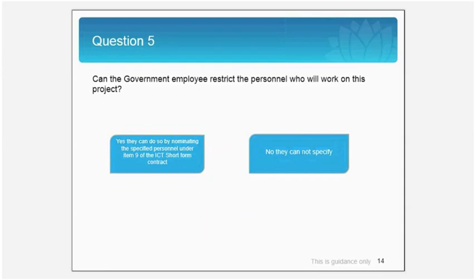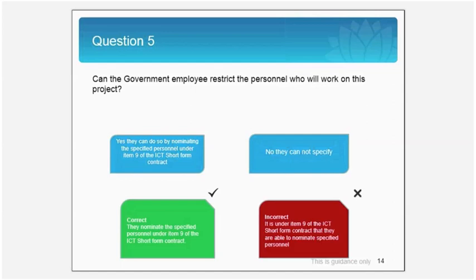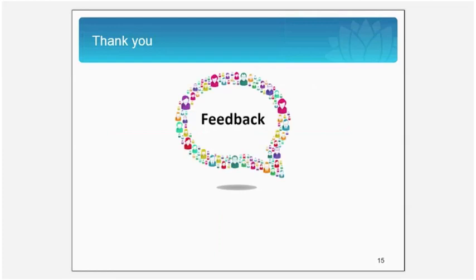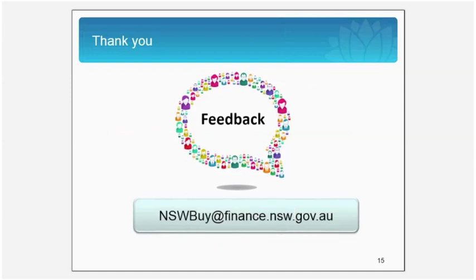Let's conclude this session with one last question. Given the secrecy of the project, can the government employee restrict the personnel who work on this project? Yes, indeed they can. Item 9 under the ICT short form contract provides this condition. We have reached the end of our training module on the ICT short form contract. We hope you found it useful, and if you have any questions or feedback, you can reach us at nswbuy@finance.nsw.gov.au. Thank you.